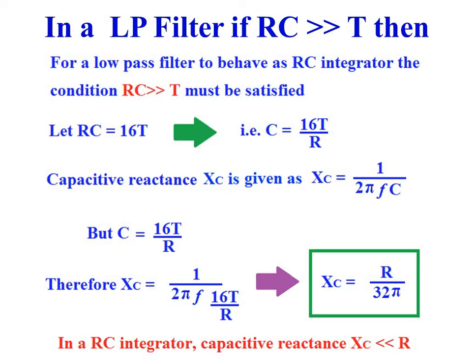RC equal to 16T means C is equal to 16T divided by R. Capacitive reactance XC is given as XC equals 1 divided by 2πFC. As C equals 16T divided by R, we can write XC equals 1 divided by 2πF times 16T over R. Since F equals 1/T, F and T cancel, giving us XC equal to R divided by 32π.